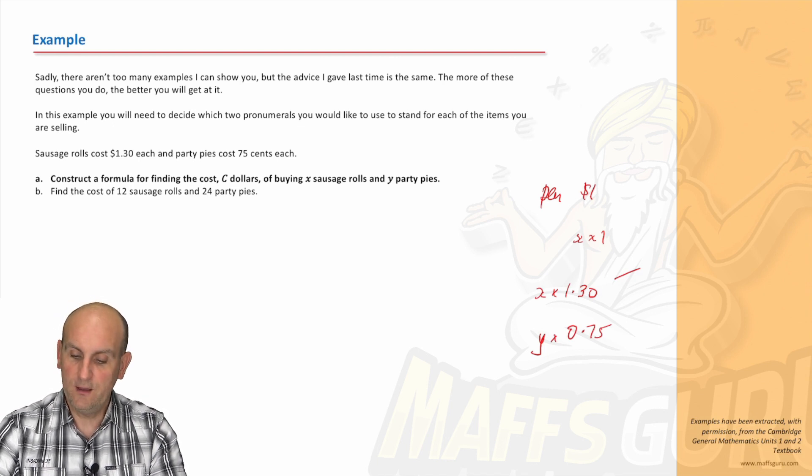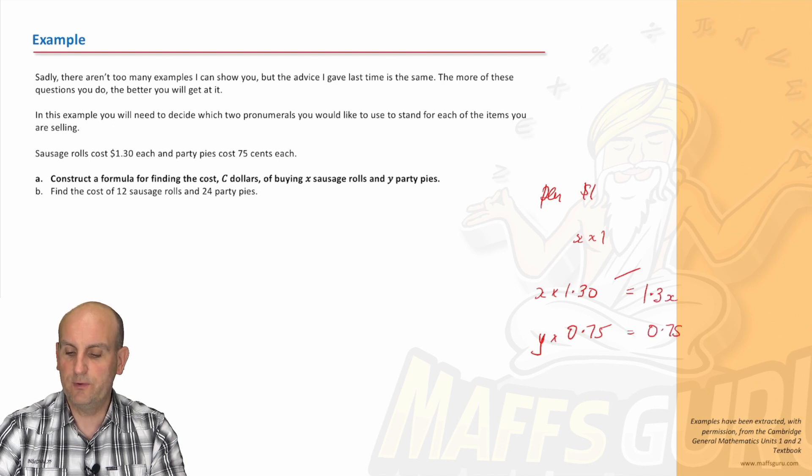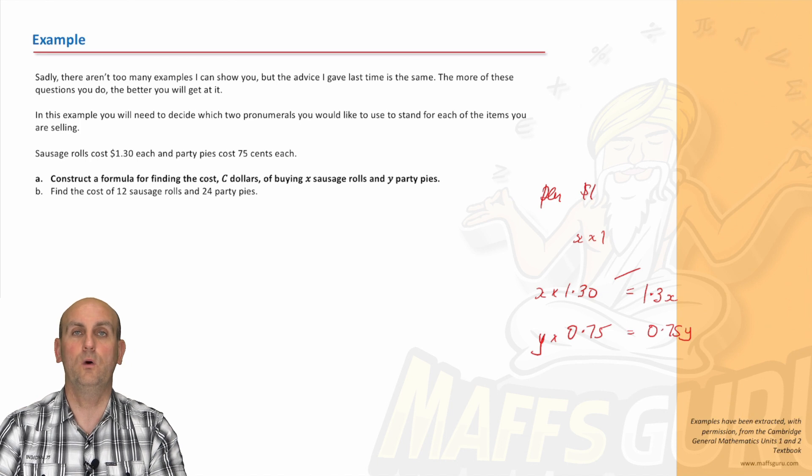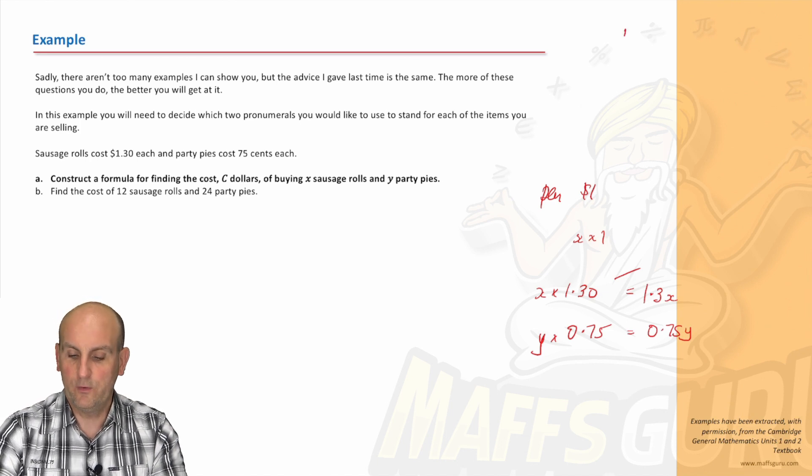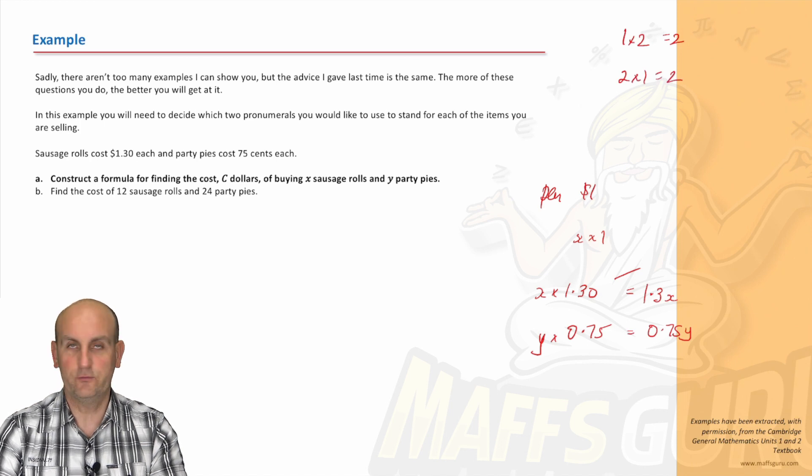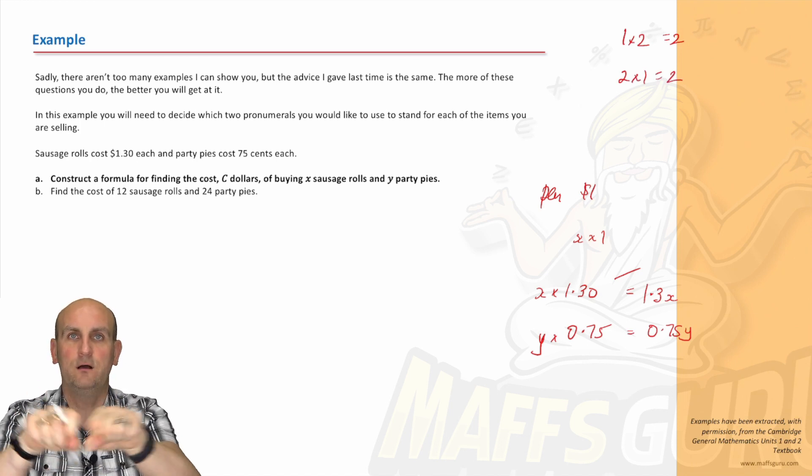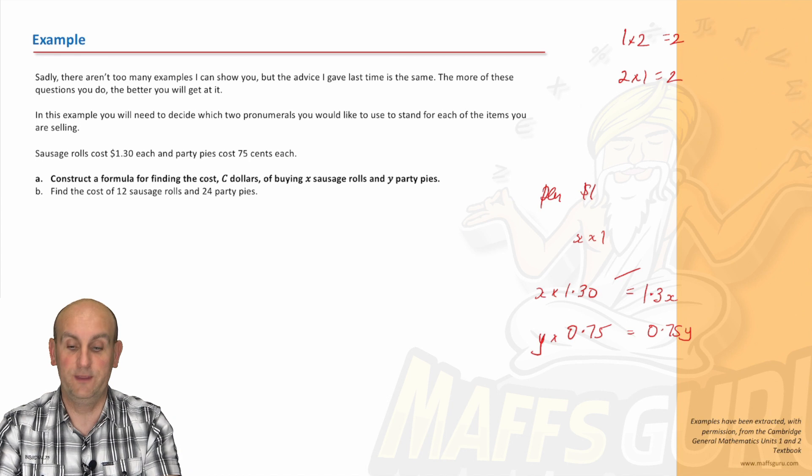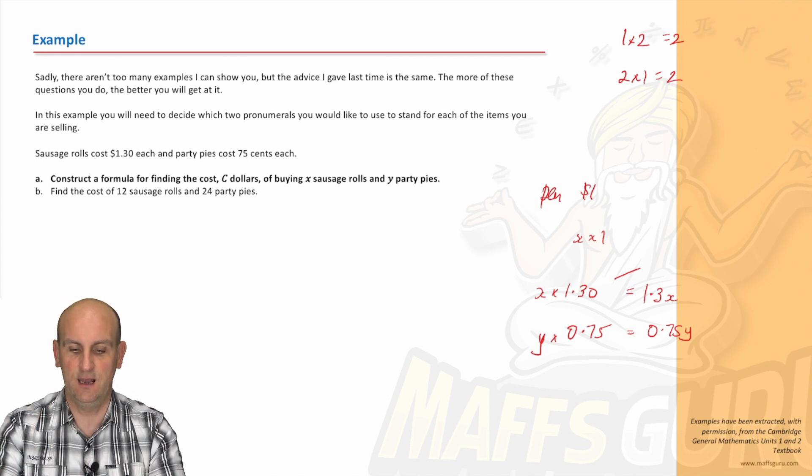Okay? Now, again, if you remember, I can write this as 1.3X. And I can write that as 0.75Y. And you're going to say, wah, wah, wah. And I'm going to say, well, okay. What's 1 times 2? It's 2. What's 2 times 1? It's also 2. So when things are multiplied, we can swap the order. And in many cases, it makes more sense to have the letters last.